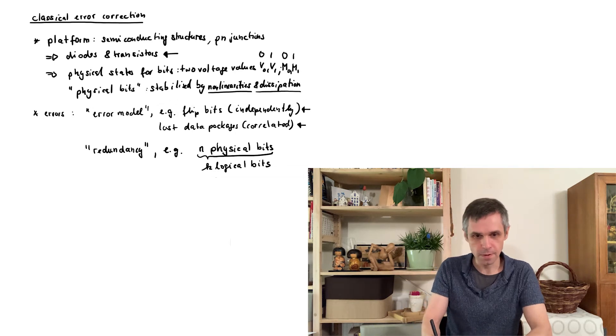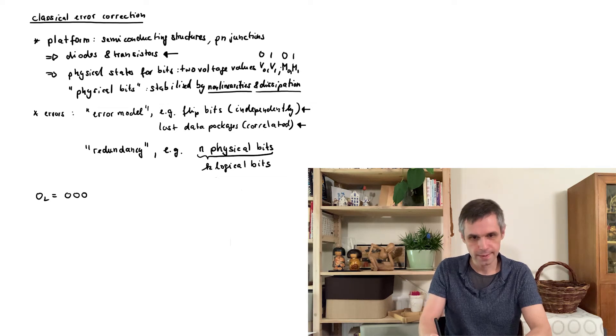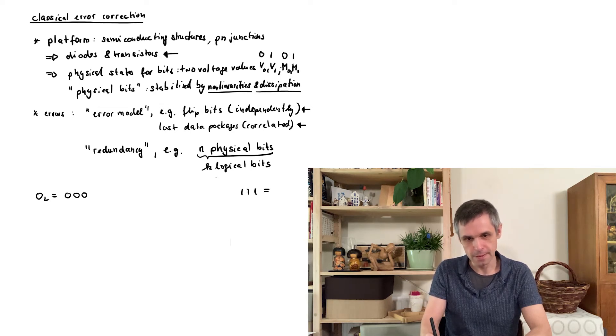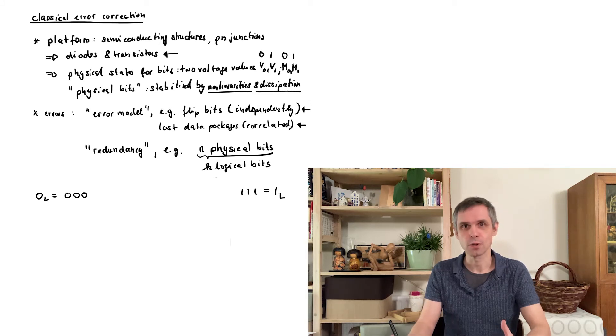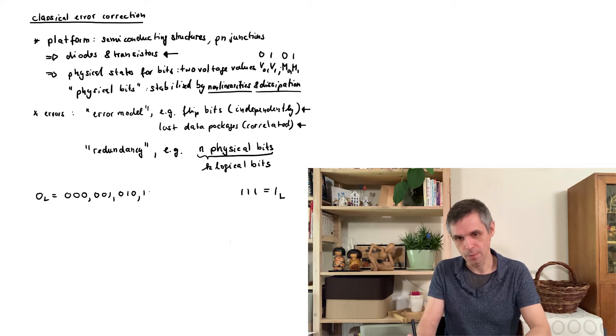The simplest example of this would be to say that one logical bit is encoded in three physical bits. For instance in this way here. And what this does is to protect us against all errors that only involve one of these bits. For instance when we start from the logical bit here and apply one of these errors, so flip one of these bits, then we obtain these three possible states.